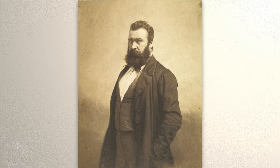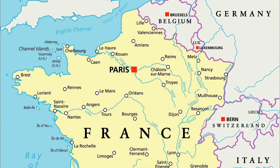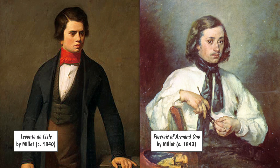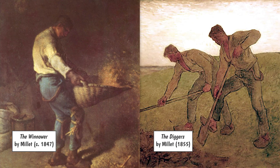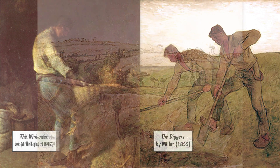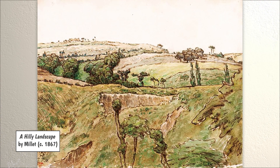Introduction. Jean-Francois Millet was a French artist in the 1800s. During this time, French artists were starting to create art with a realistic and natural style. He started painting portraits; however, he is better known for his paintings of nature and everyday life. Most of the subjects in Millet's works were farmers. He also painted the landscapes around him.